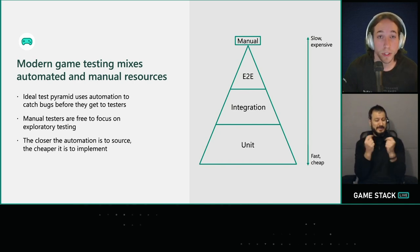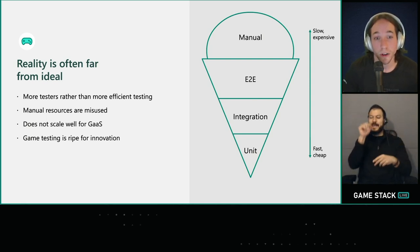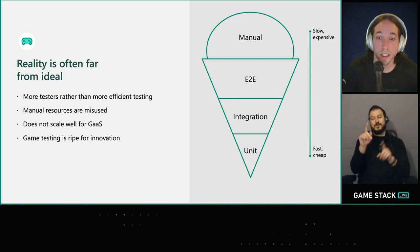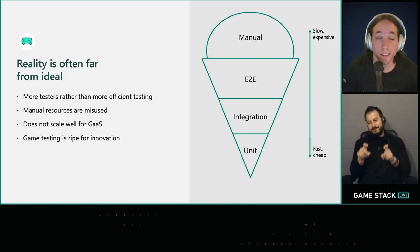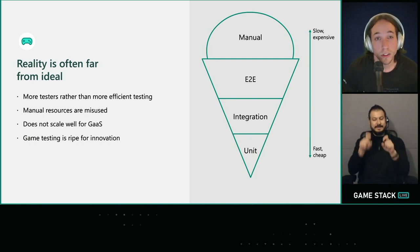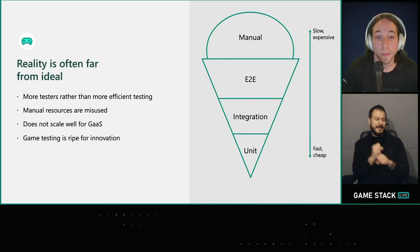Unfortunately for most teams, the reality is far from ideal. As you can see here, we've flipped the ideal pyramid upside down into what looks like an ice cream cone. A team operating within this format will spend most of their test budget to have an army of expensive manual testers find simple functional bugs. You'd think all we need to do is avoid flipping the test pyramid, and while good development practices that encourage automation and quality at the source will get you most of the way there, a major trend in gaming has introduced a wide opening for innovation.